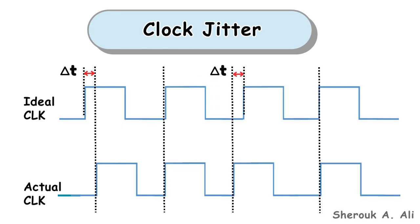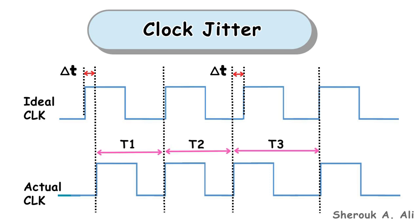At the fourth cycle, the actual clock edge occurs at the same moment as the ideal clock edge. These unwanted variations of a clock edge from its ideal position lead to variations in the clock period over time. Therefore, T1 is not equal to T2, which is not equal to T3.